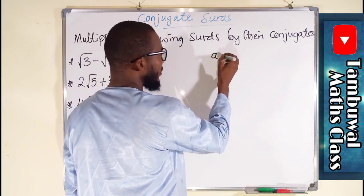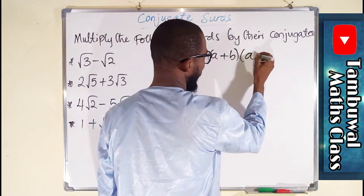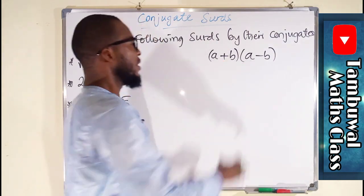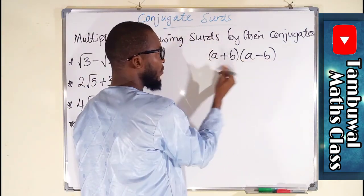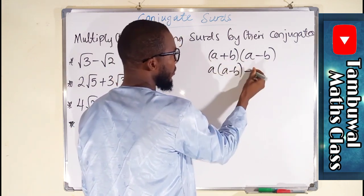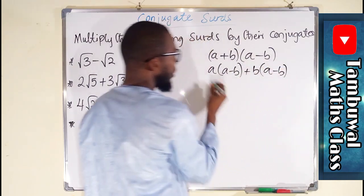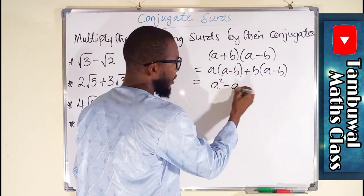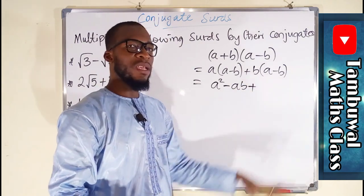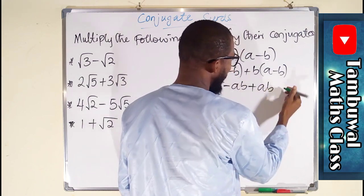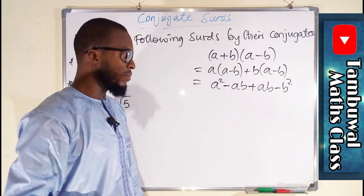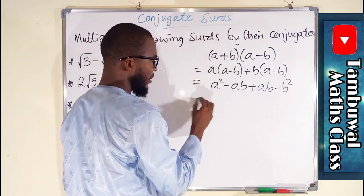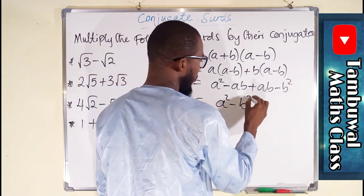If you have the product of two binomial terms that are exactly alike but have a difference of sign — one is positive while the other is negative — let us expand this: a multiplied by a minus b, plus b multiplied by a minus b. So a times a is a squared, a times negative b is negative ab. Then b times a is ab, and b times negative b is negative b squared. The middle terms, negative ab plus ab, cancel to zero, leaving a squared minus b squared.